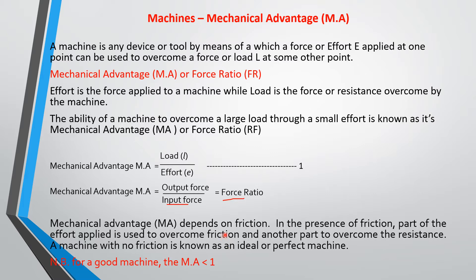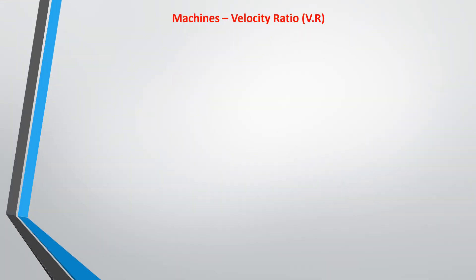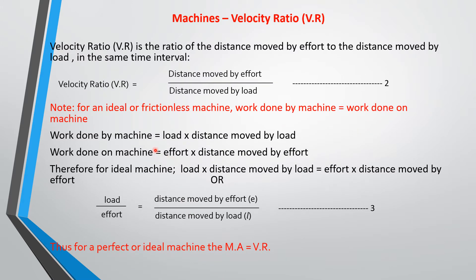We are now going to discuss velocity ratio. The velocity ratio of a machine is the distance moved by the effort over the distance moved by the load. For an ideal machine, work done by the machine equals work done on the machine — that is for a frictionless or perfect machine — but no machine is perfect.